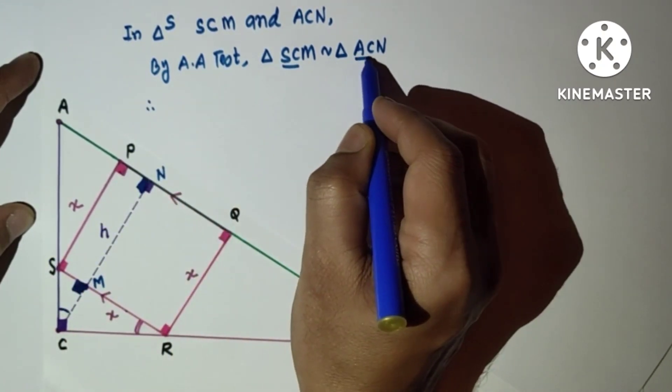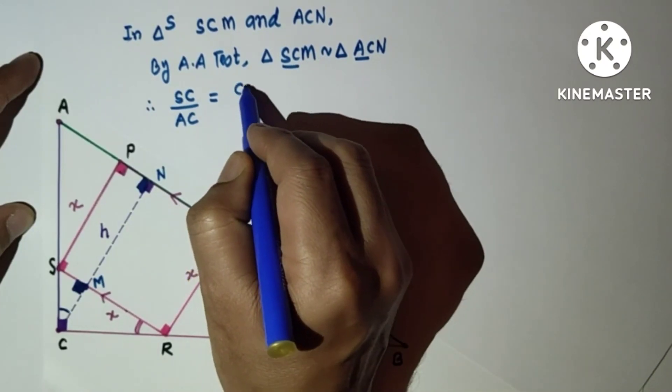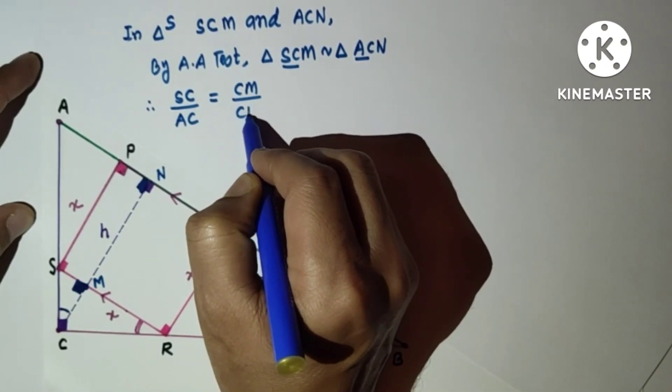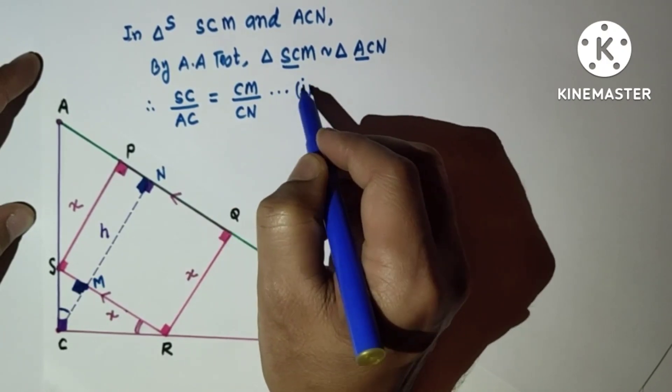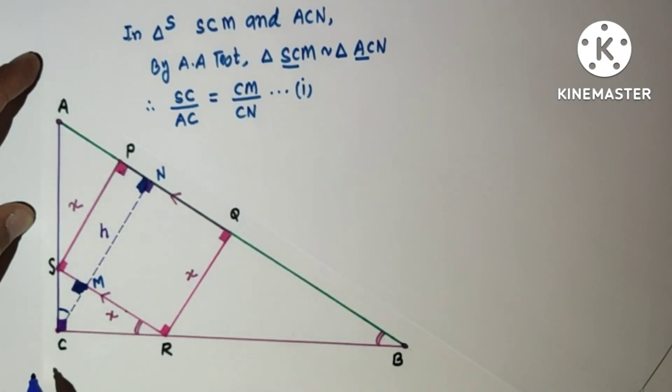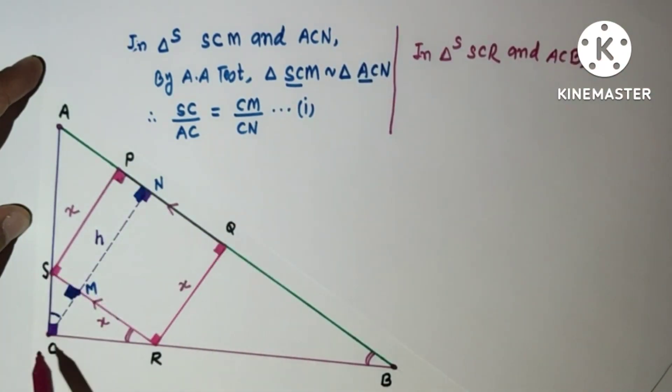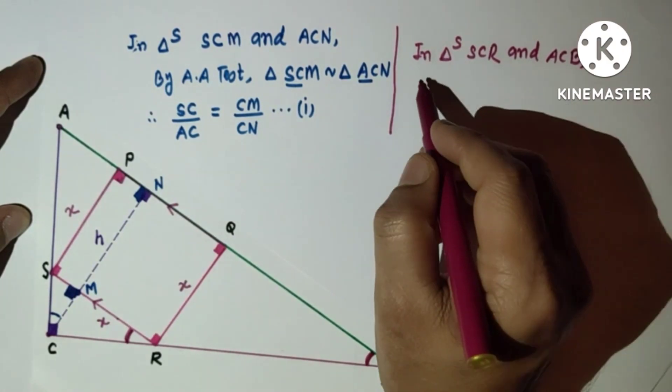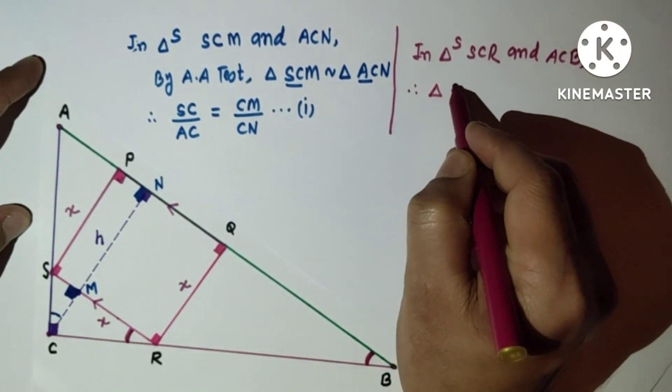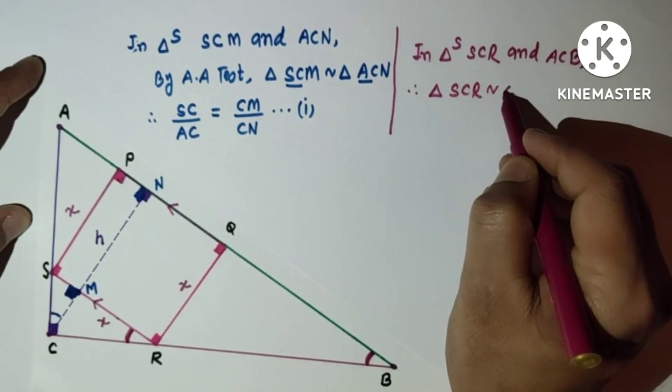Now in triangles SCR and ACB: angle SCR is 90°, angle ACB is 90°, and these two are corresponding, so they are equal. By the AA test of similarity, triangle SCR is similar to triangle ACB.